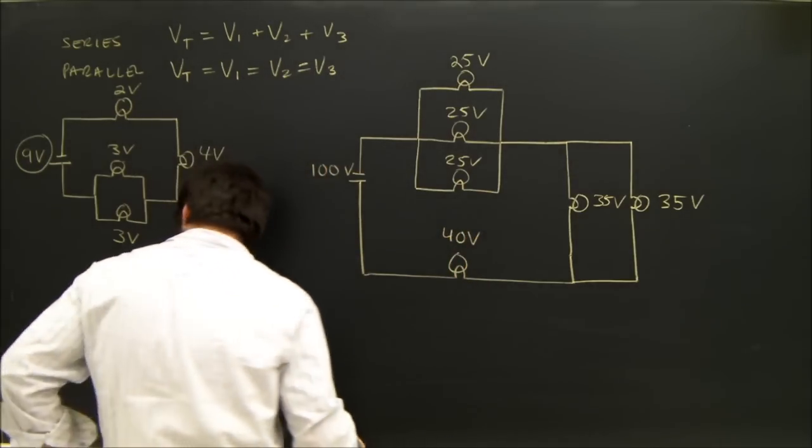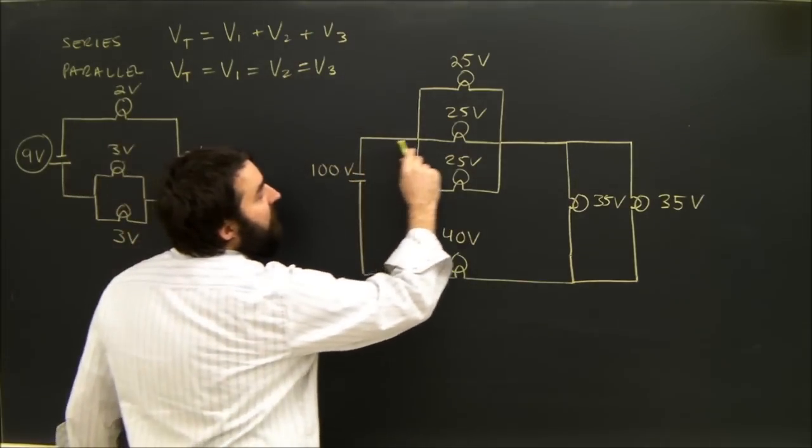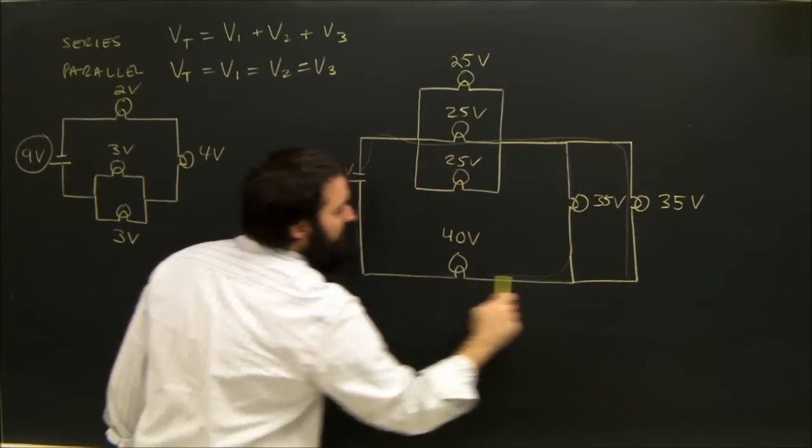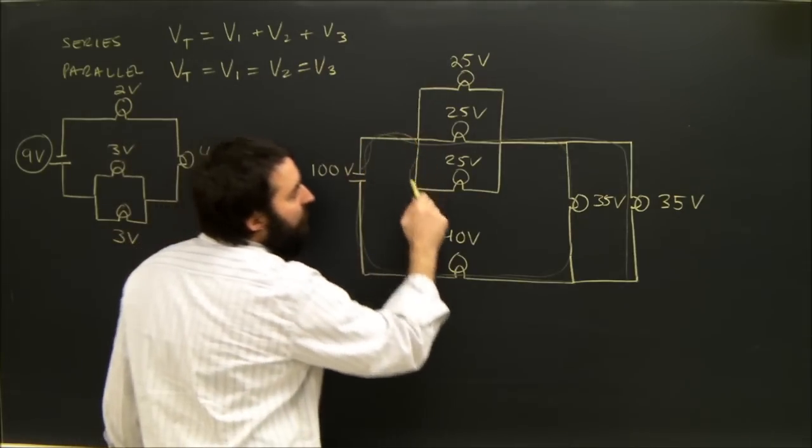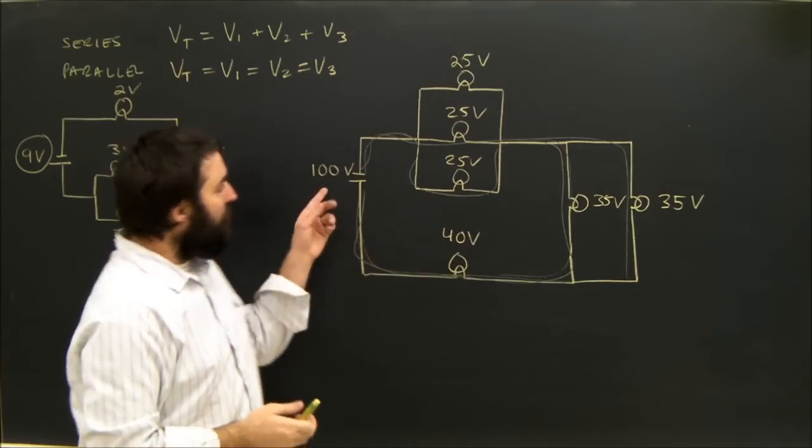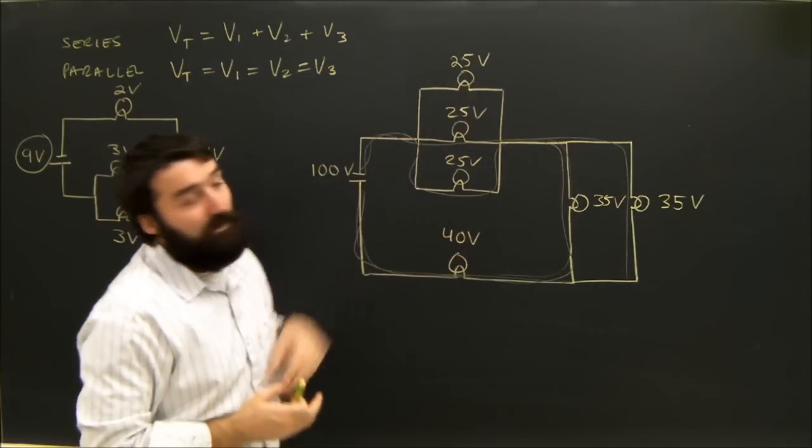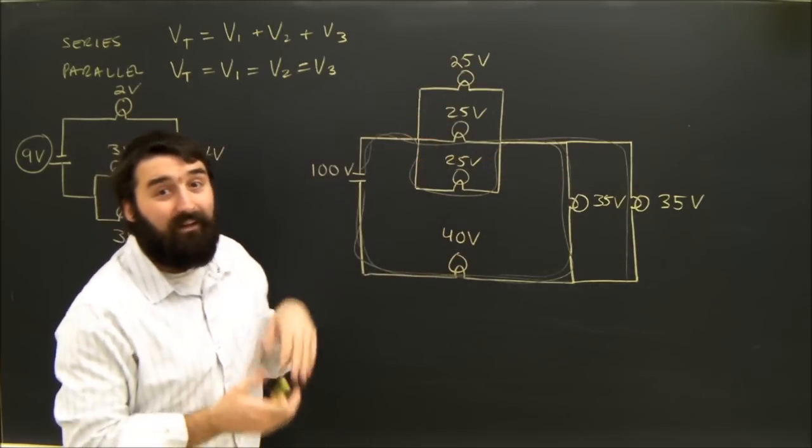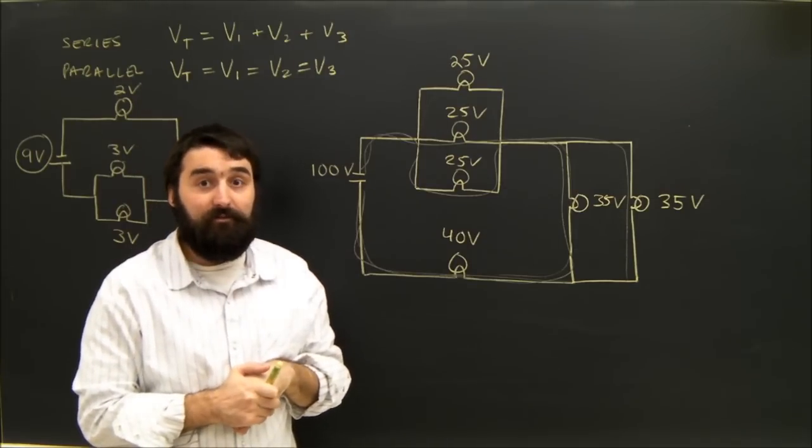No matter which way the electron goes, if it goes 25, 35, 40, it loses 100. No matter how it goes, the total voltage is equal to the sum of all the voltages if they're in series. Anything connected in parallel automatically has the same potential difference.